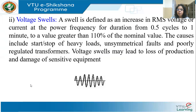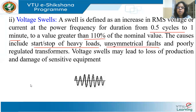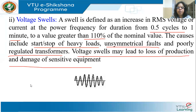Swell is the reverse: for a duration of 0.5 cycles to one minute, voltage rises to greater than 110% — more than 1.1 per unit of nominal. Causes include starting and stopping of heavy loads, unsymmetrical faults that cause a dip in one phase and increase in another, and poorly regulated transformers. Voltage swell may lead to loss of production and damage of sensitive equipment.